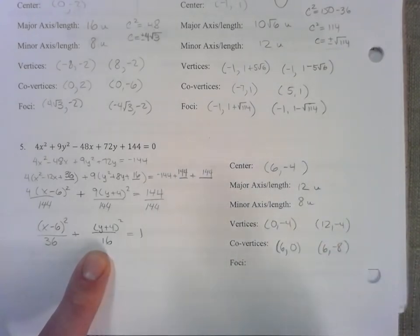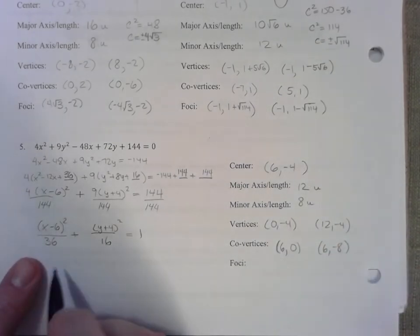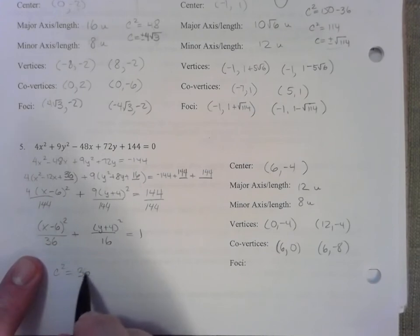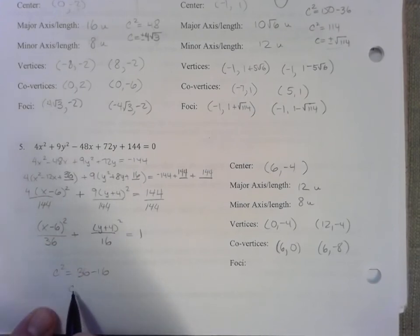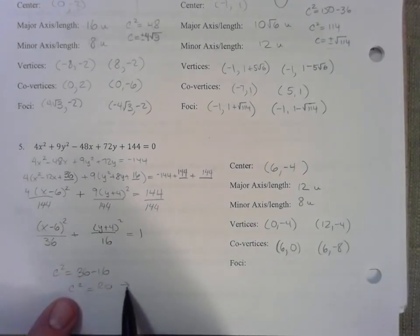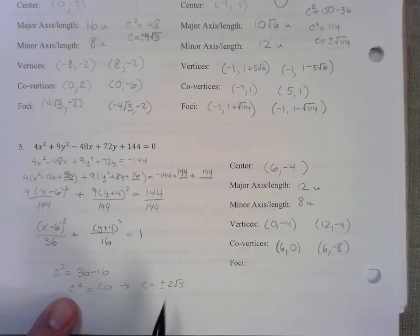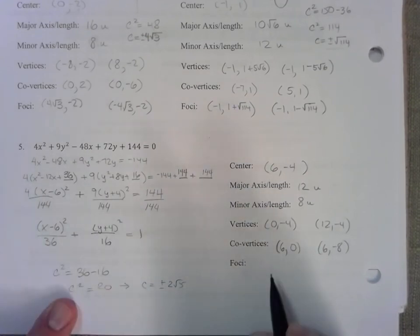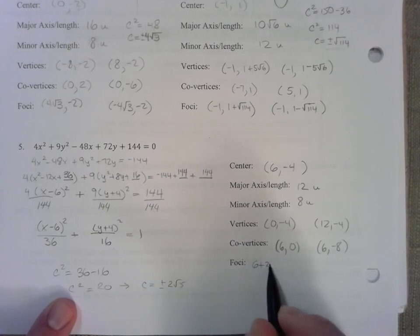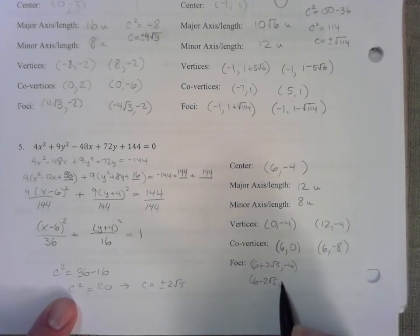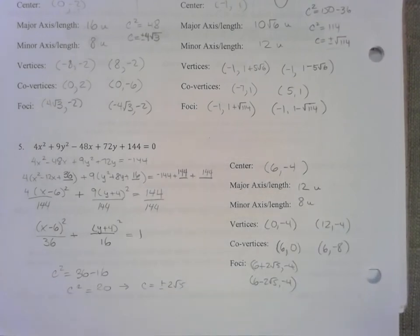Finally, let's finish this. c squared equals a squared minus b squared. That makes c squared 20, or c is equal to plus or minus 2 root 5. We're going to add and subtract that to the x-coordinate because again this is a wider ellipse. So 6 plus 2 root 5 comma negative 4, 6 minus 2 root 5 comma negative 4. These would be the location of the two foci.